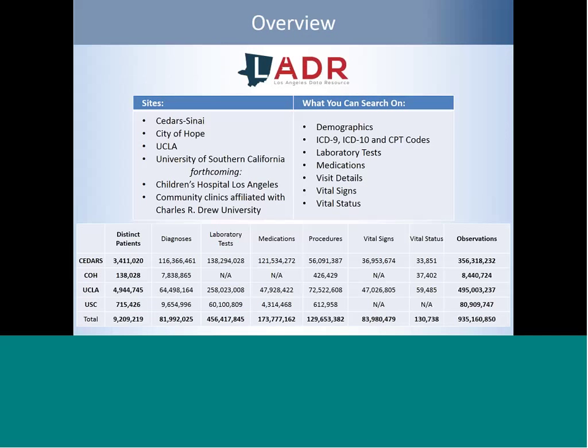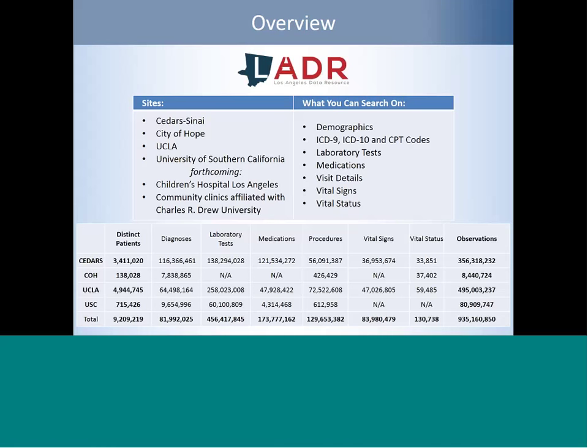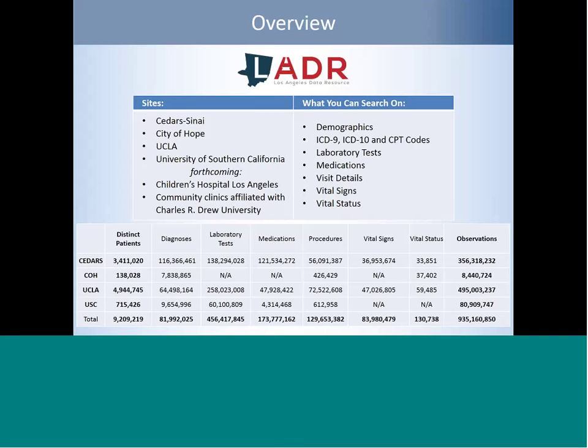This slide gives you an idea of the data available in LADDER. The sites currently in LADDER include Cedars-Sinai, City of Hope, UCLA, USC, Children's Hospital LA, and Community Clinics affiliated with Charles Drew University, which will be loading their data next. The variables available to search on include demographics, diagnosis and procedure codes, lab tests, medications, visit details, vital signs, and vital status.